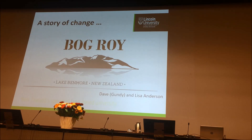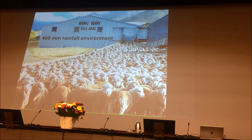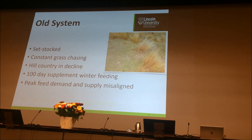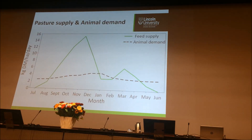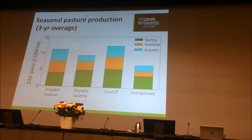Here's my second case study. This is a 400mm rainfall environment — a high country merino station. Their old system was set stock for much of the year, constantly chasing grass, 100 days of supplementary feed, meaning silage or hay having to be made for 100 days. Feed demand and supply were misaligned. You can see a large increase in feed supply, but that gets cut and carried to feed animals through winter. The lucerne actually gave them more feed — moving from their unimproved system to potentially 12 to 10 tonnes of dry matter.